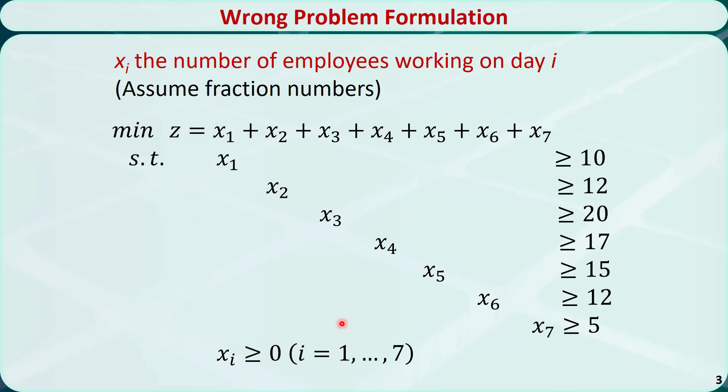Before we talk about the correct problem formulation, let's look at this wrong problem formulation. In this formulation, we define xi as the number of employees working on day i, i is from 1 to 7.